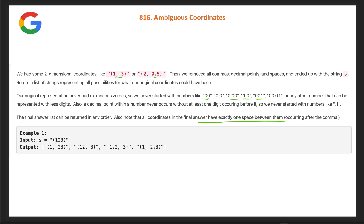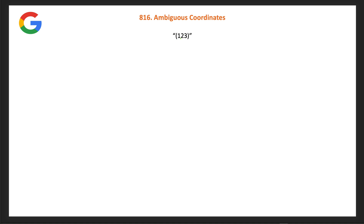For example one, given '123', we first try to place the comma. We can divide it at two places: '1' and '23', or '12' and '3'. So we only have two positions to place the comma.